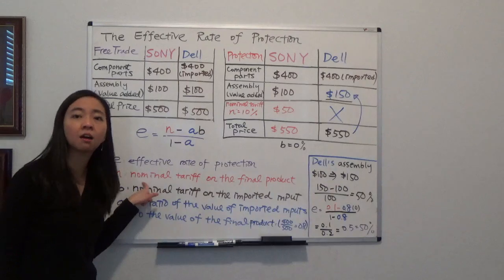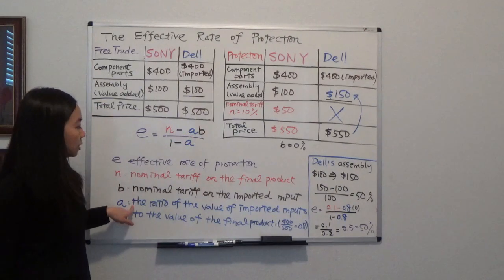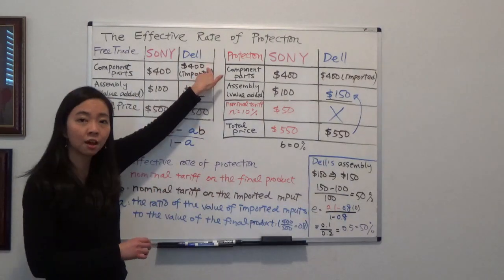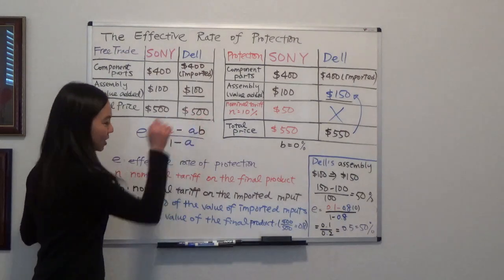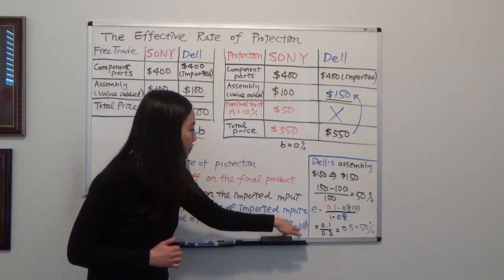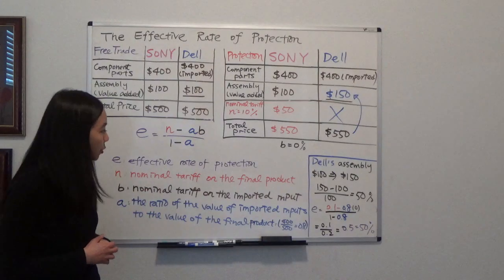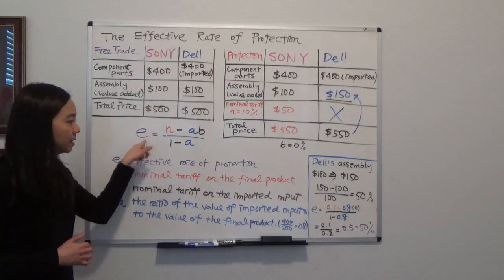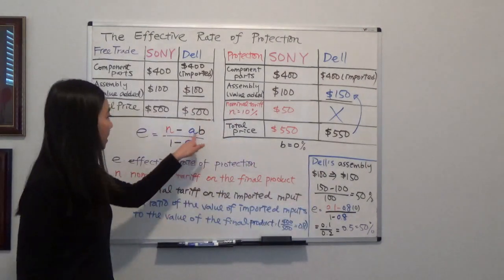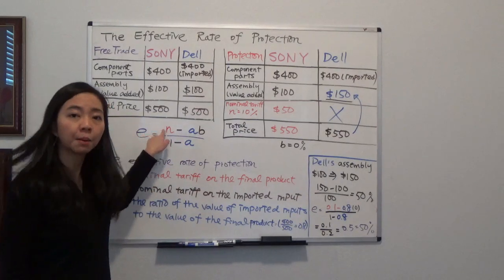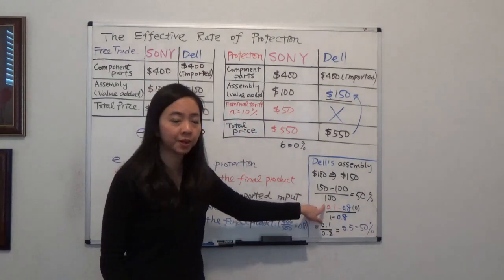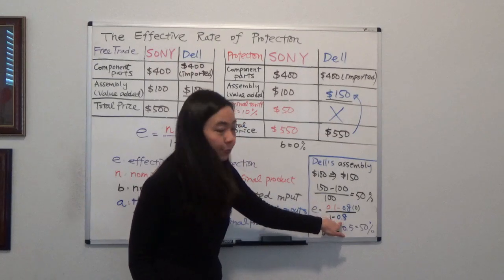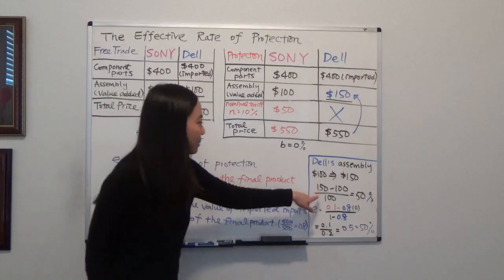The formula is: effective rate E equals N minus AB, divided by 1 minus A. Here N is the nominal tariff rate on the final product, A is the ratio of the value of imported inputs to the value of the final product, and B is the nominal tariff rate on imported inputs. In our case, the value of imported components is $400 and the final product was $500, so A equals 400 divided by 500, which gives 0.8. B is 0% since the components are tariff-free. Plugging in: E equals (0.1 minus 0.8 times 0) divided by (1 minus 0.8), which gives 50% — exactly the same result as before.